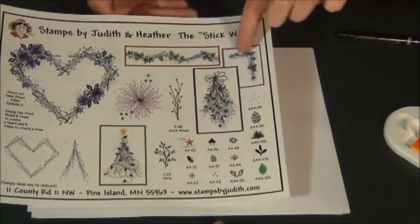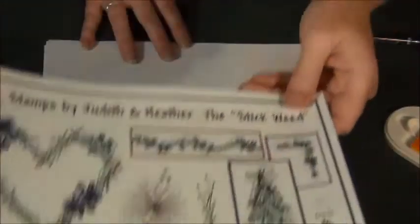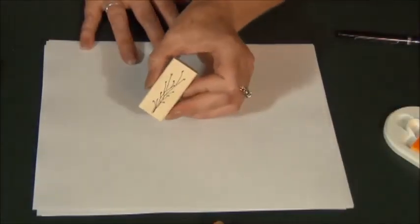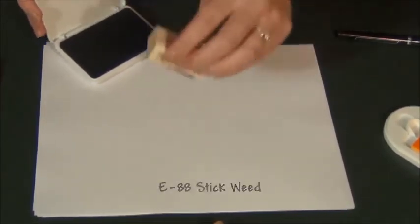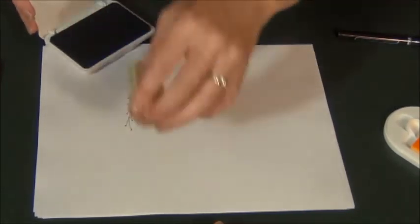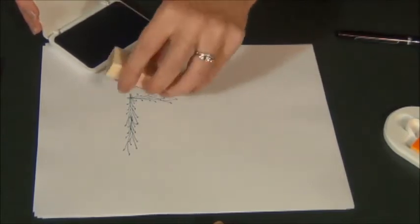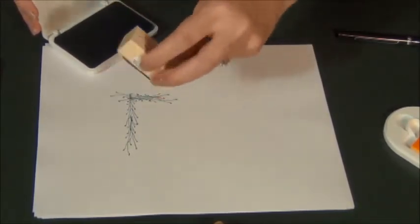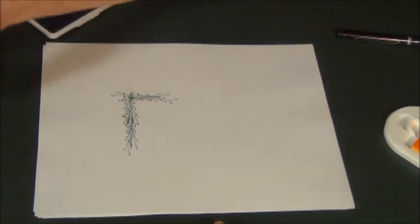And there's your garland. The fifth idea on episode three is a corner. And this is an extremely simple thing to do. So I'm going to take my stickweed, hunter green ink. You can also do the same technique to create a frame, just by continuing on and around. Turn around and stamp it the opposite direction. And there's a simple corner.